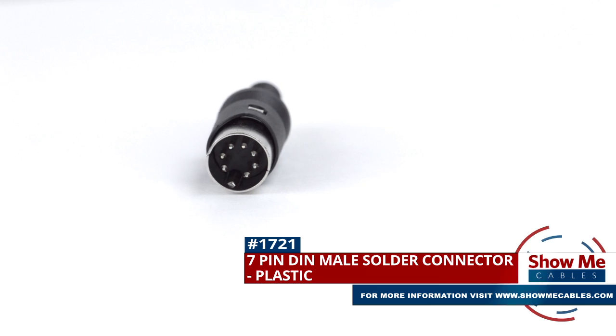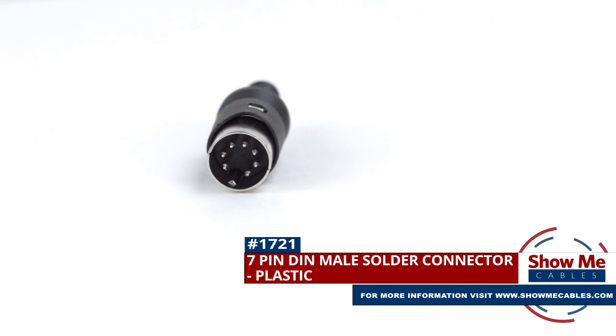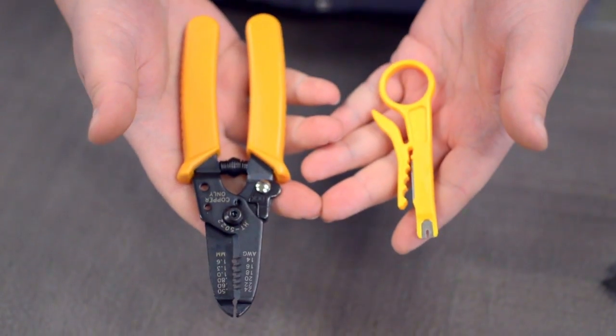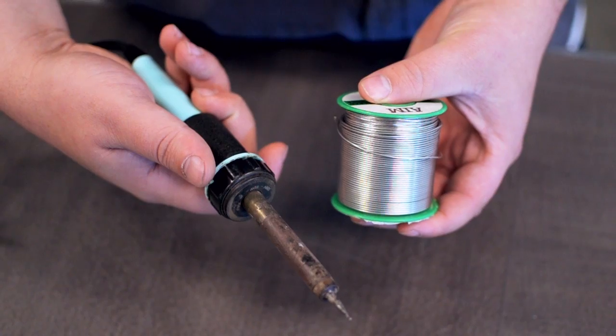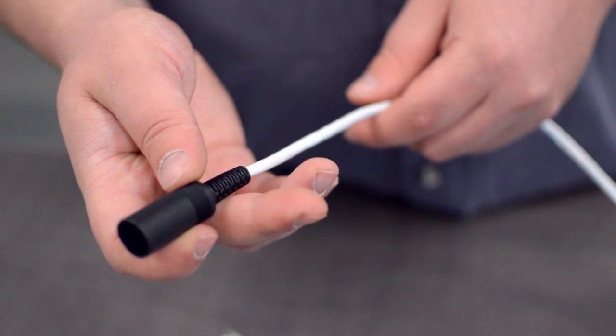This is the 7-pin DIN male solder connector. To install, you will need the following items: low voltage cable, wire strippers, solder and soldering iron, and the DIN connector. Start by inserting the plastic boot over the jacket.